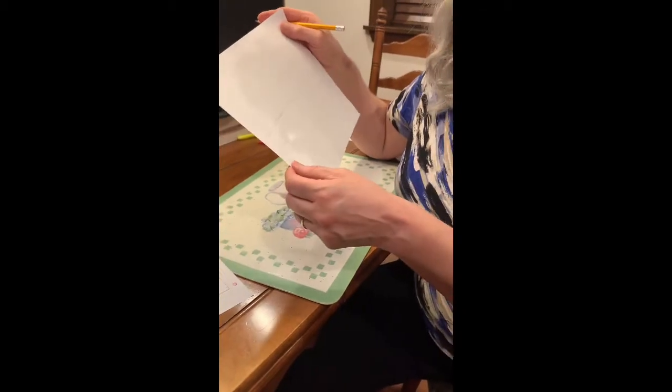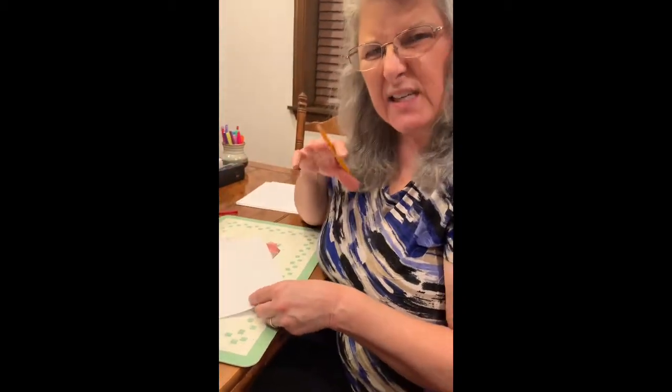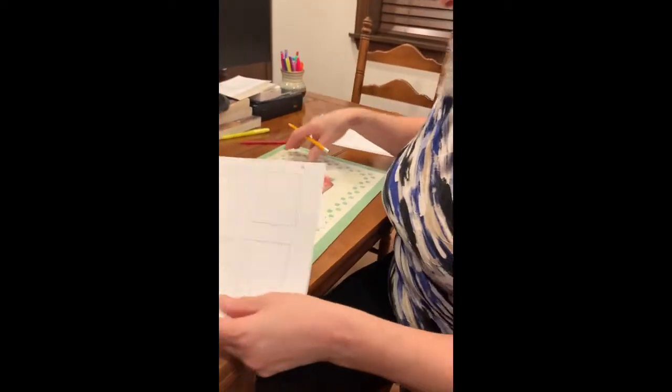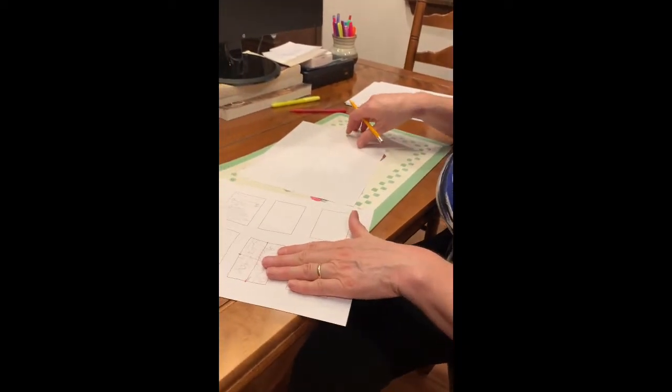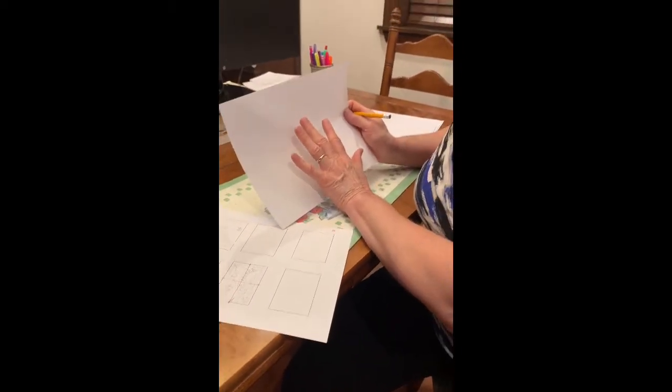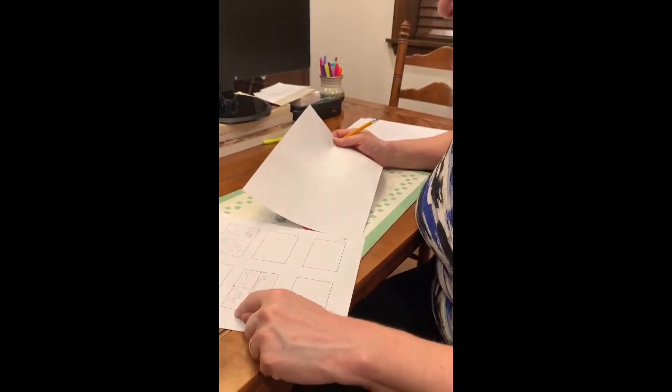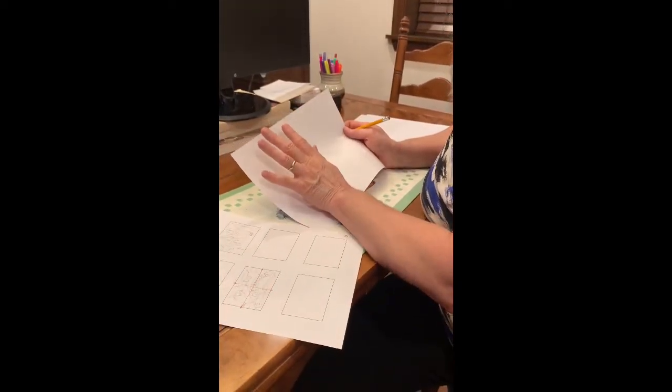Again, younger students, it might help if your parent helped you with that part just to keep it really light. Now what we're going to do, because this rectangle is similar to this rectangle, I can draw just what's in this box and keep it about the same size.